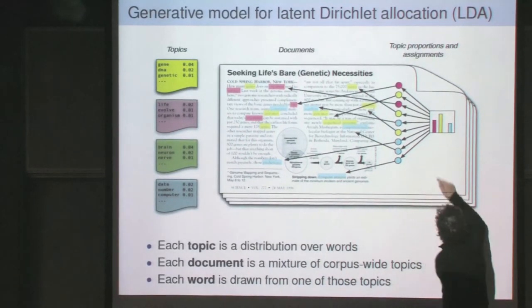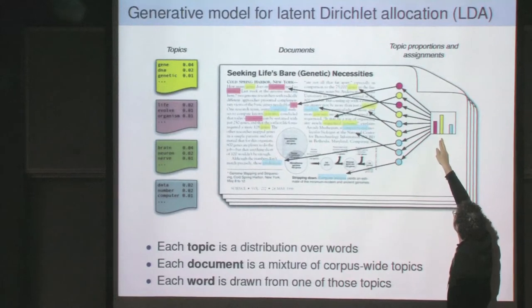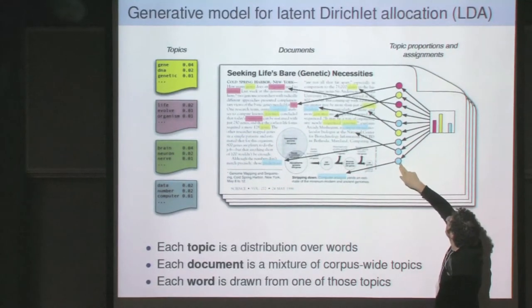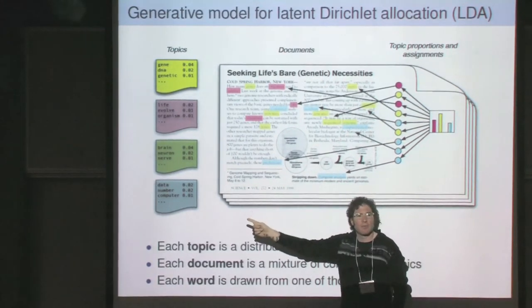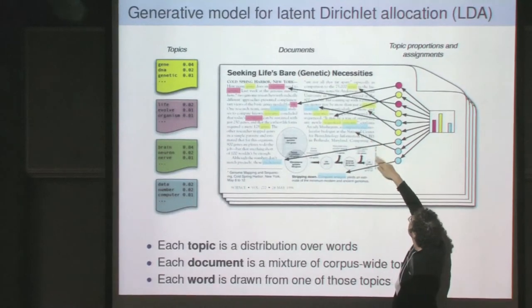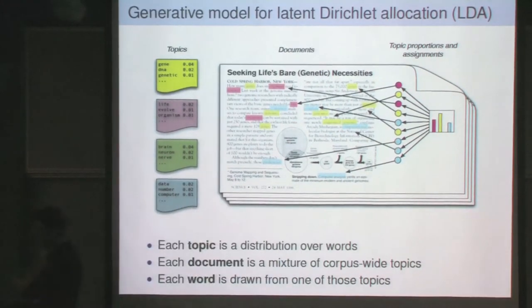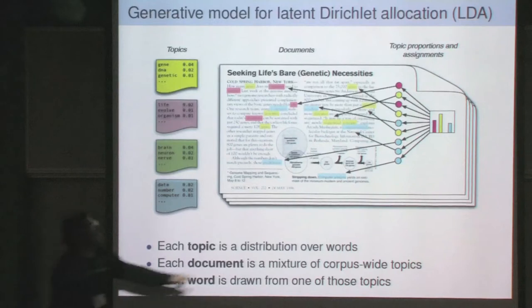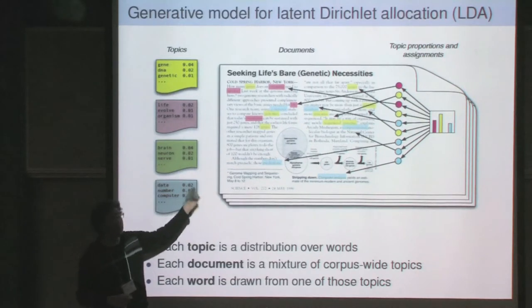For each article, I first choose a distribution over these distributions—a histogram over topics. Then for each word, I choose a topic from that distribution. For example, I choose the blue topic and then look up the distribution over terms associated with that topic and choose the word 'analysis.' I choose the yellow topic and choose the word 'genetic.' I choose the blue topic and choose 'predictions.' Sometimes I choose the pink topic and choose words like 'life' and 'organism.' Every document is generated this way, and when I turn the page, I choose a new distribution over topics.